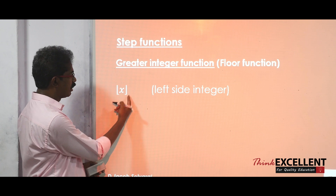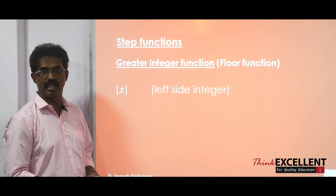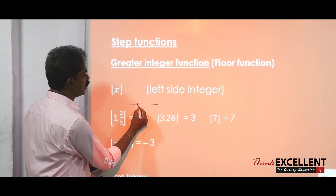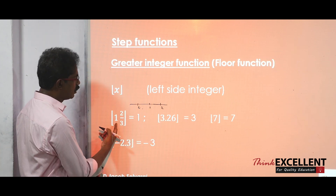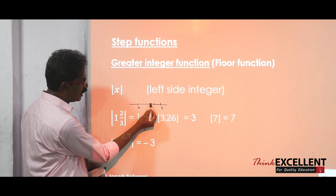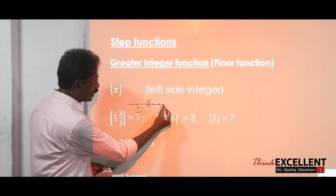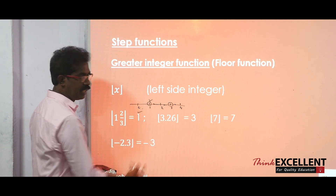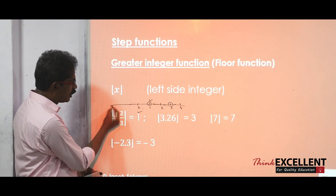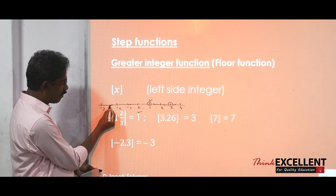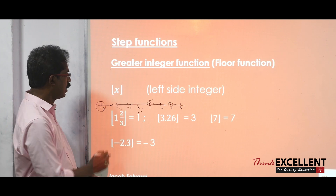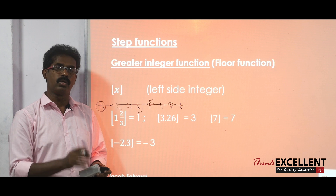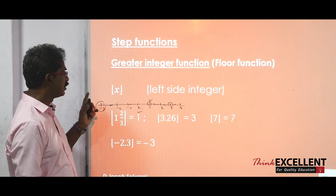The greatest integer function — you take the left side integer. For example, the greatest integer function of 1⅔: since 1⅔ is between 1 and 2, you take the left side integer, which is 1. For 3.26, it is between 3 and 4, so the answer is 3. Greatest integer function of 7 is 7 itself. For −2.3, it lies between −3 and −2, so you take the left side integer, which is −3. Plot the point on the number line and take the left side integer.